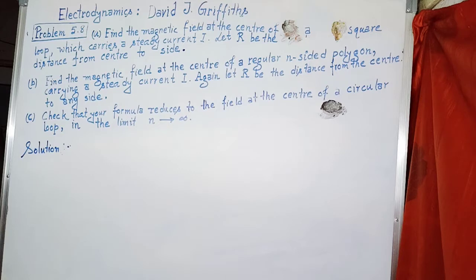In question C, it is given that we must check that the formula reduces to the field at the center of a circular loop in the limit as n tends to infinity. So let's solve this question.